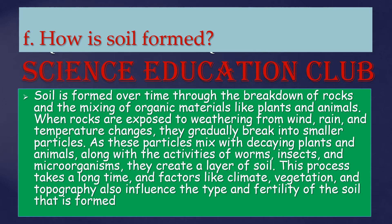How is soil formed? Soil is formed over time through the breakdown of rocks and the mixing of organic materials like plants and animals. When rocks are exposed to weathering from wind, rain, and temperature changes, they gradually break into smaller particles. As these particles mix with decaying plants and animals, along with activities of worms, insects, and microorganisms, they create a layer of soil. Factors like climate, vegetation, and topography also influence the type and fertility of the soil formed.